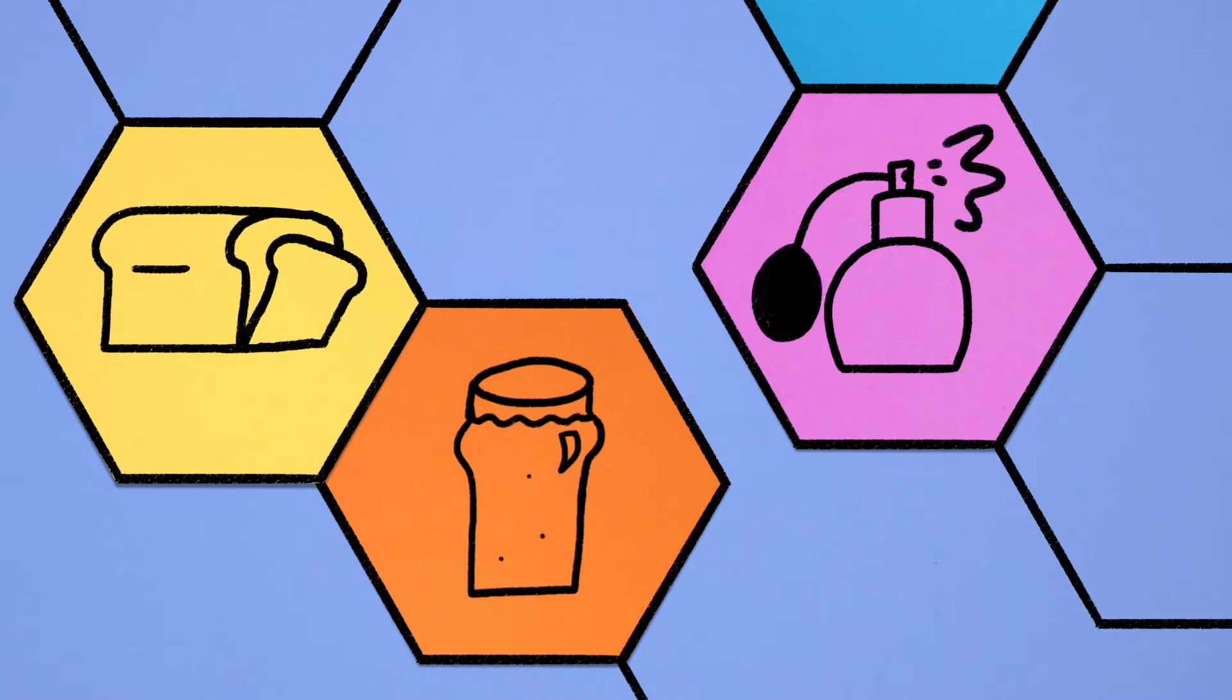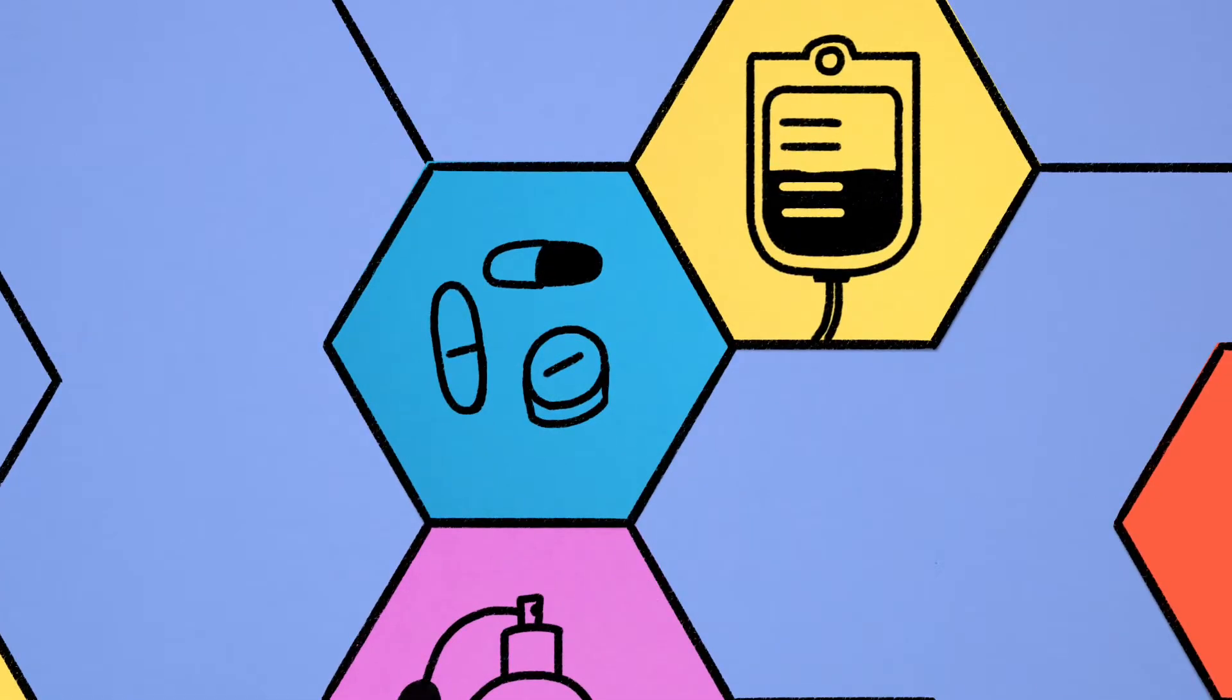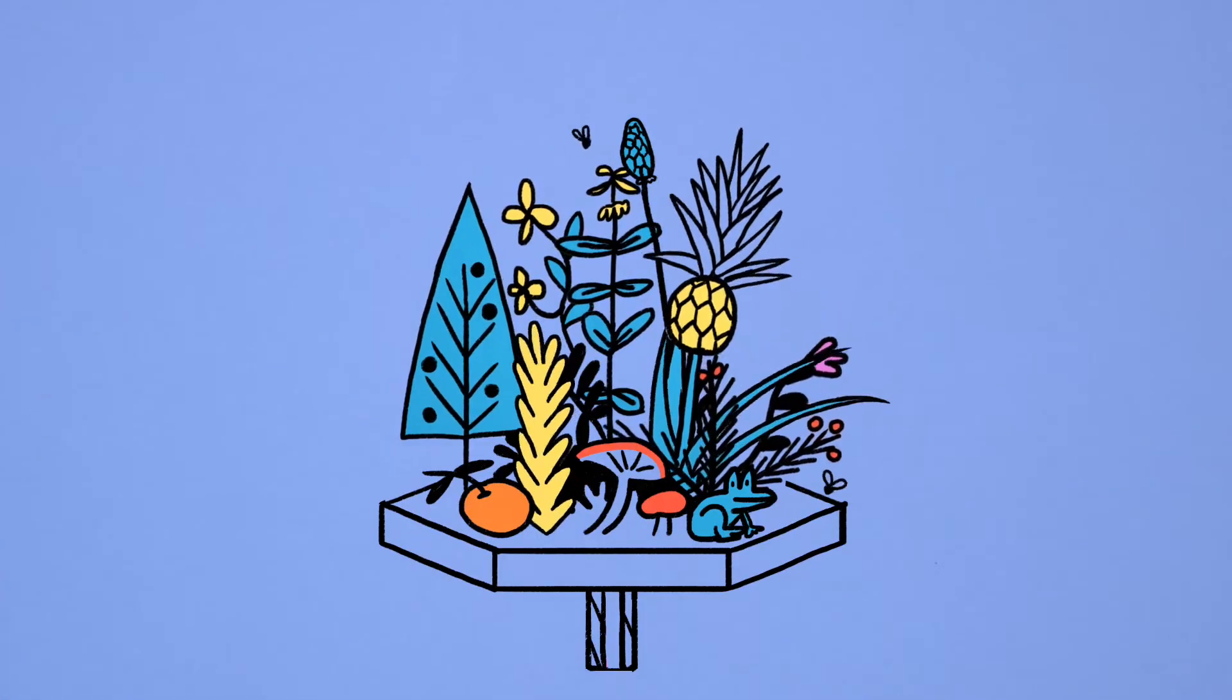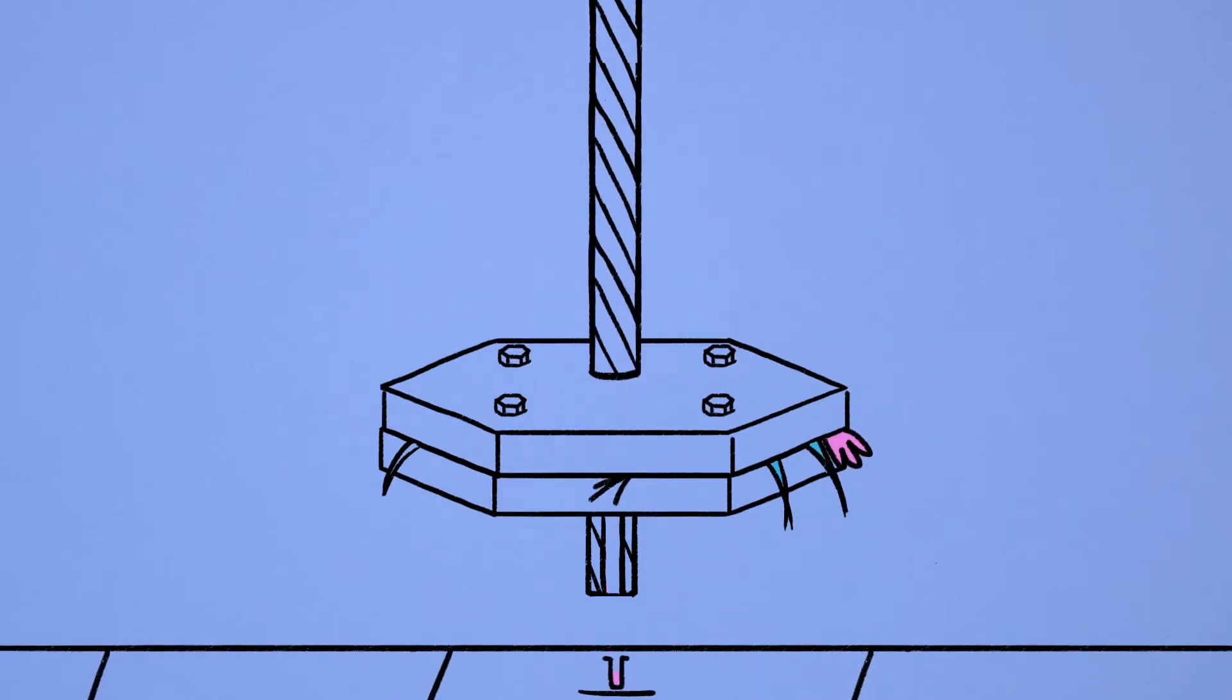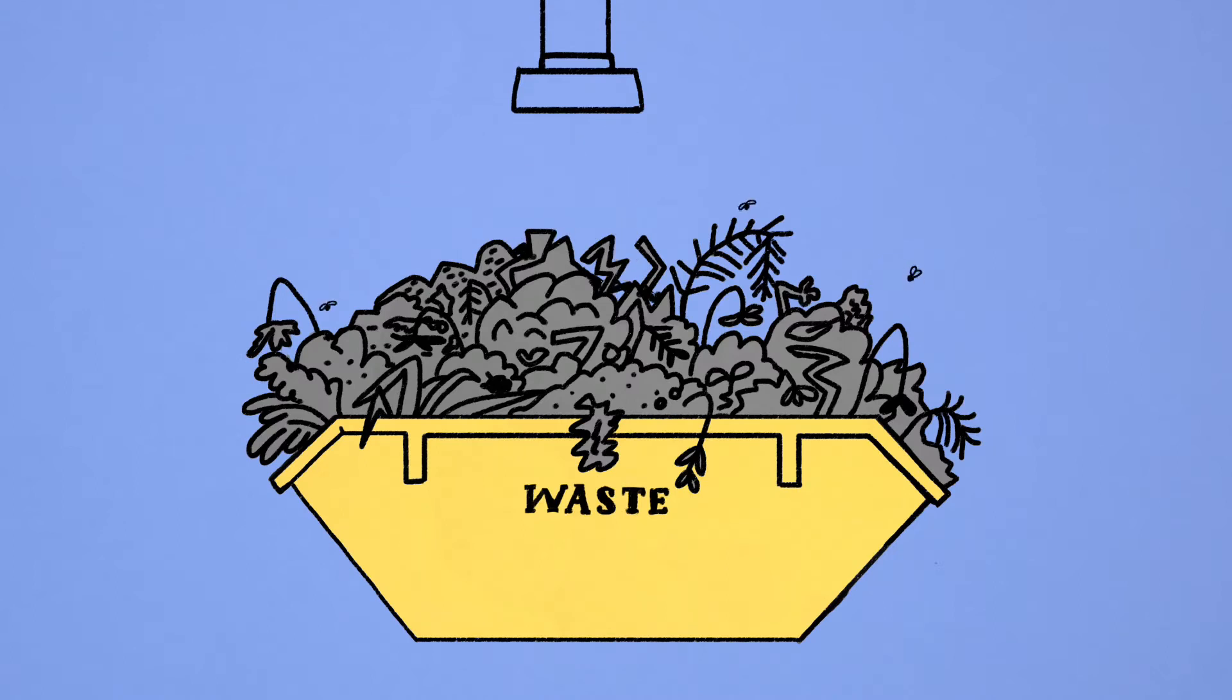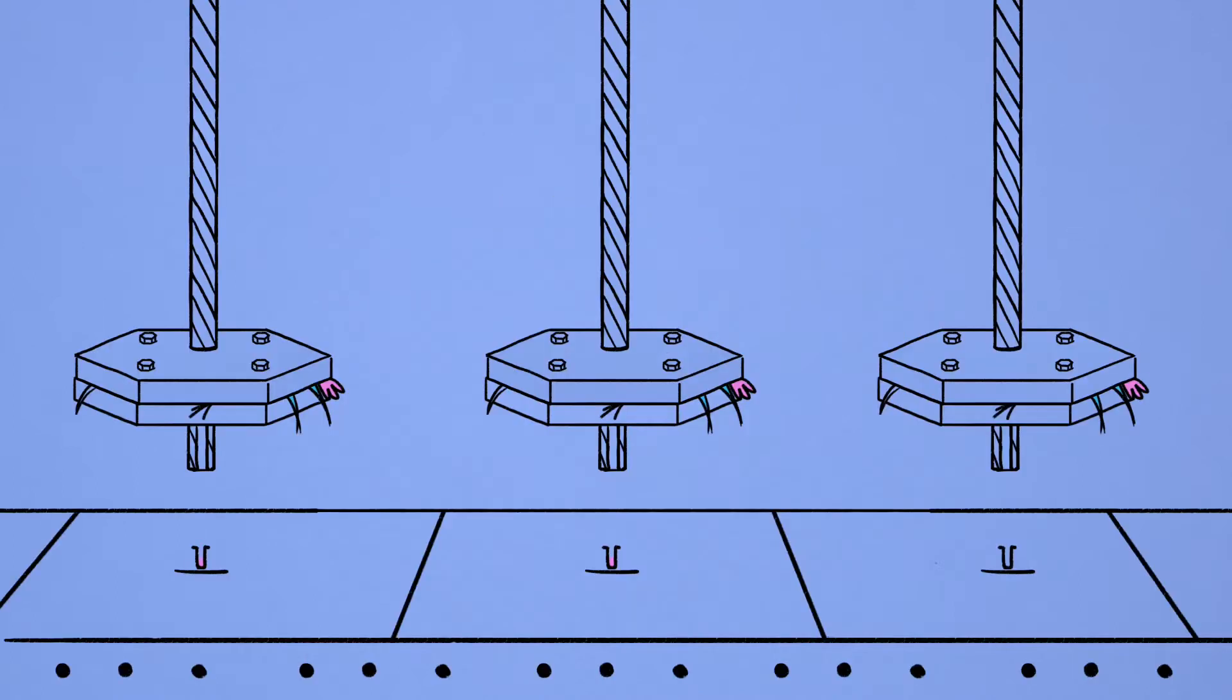They might smell or taste great, or provide the building blocks for drugs and other things we need. But because the natural world usually produces these chemicals in tiny quantities, it would take a lot of nature and make a lot of waste to produce them naturally on an industrial scale.